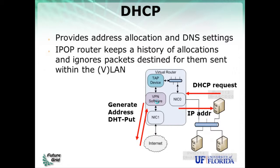For DHCP requests in this case, a node sends a DHCP request on the local area network, which is captured by the virtual router running in the same local area network. The virtual router must be capable of acting as a DHCP server. IPOP then generates a random address, tries to register it on the DHT, and eventually returns an IP address to the node that sent the DHCP request.